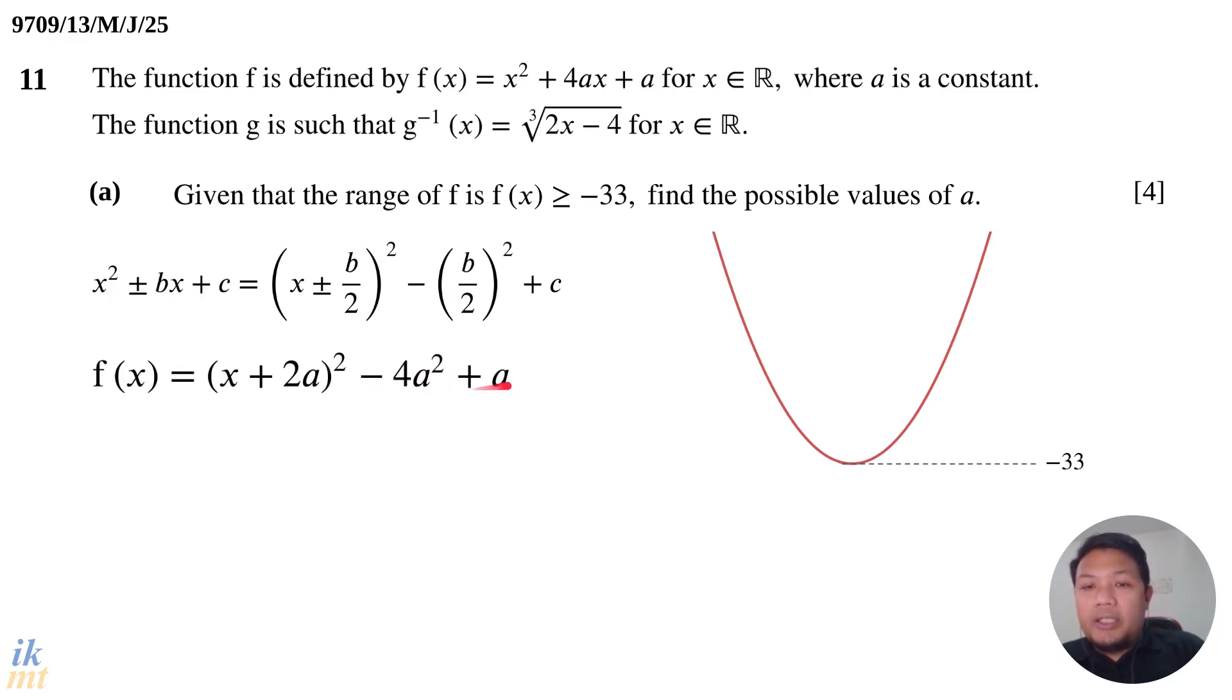So, the minimum value of the quadratic here is given as negative 33. So you can then equate this, negative 4a squared plus a, as negative 33. So now you have an equation with only one unknown, which is a, which means you probably can solve this one. So, if you rearrange this, you'll get 4a squared minus a minus 33 equals zero. And this is a quadratic equation in a.